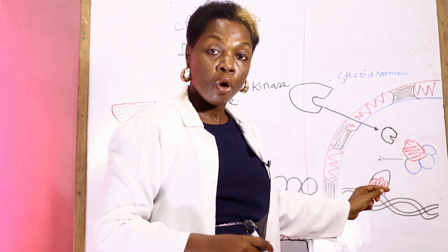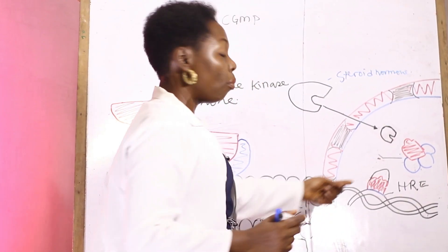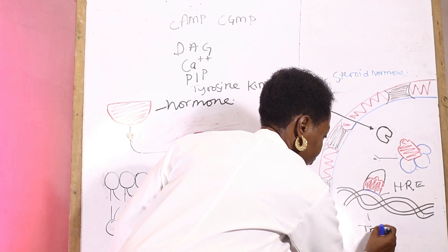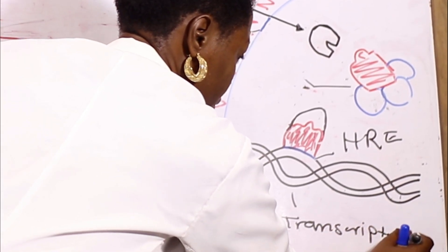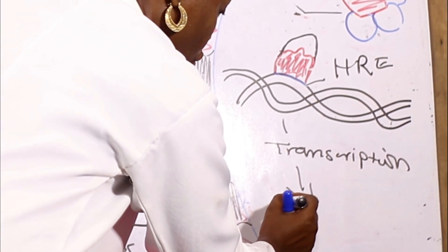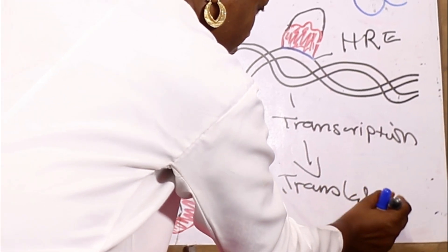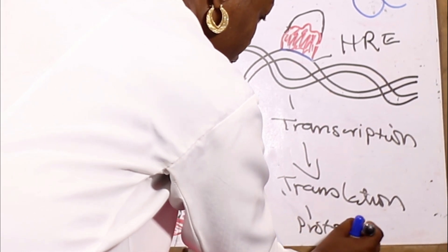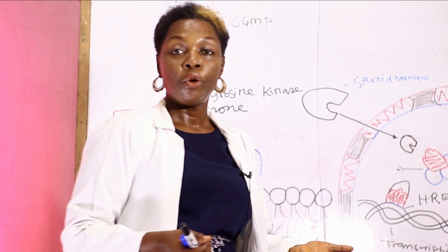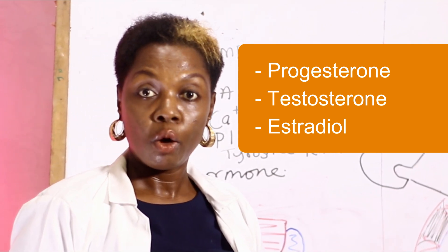When the steroid hormone transcends the cell and forms the intracellular hormone-receptor complex, it migrates to the nuclear membrane, where it binds to hormone-responsive elements — HRE. These hormone-responsive elements bind to the nuclear chromatin, causing the transcription of DNA to RNA, and then eventually the translation of RNA to proteins. Hormones that act via this mechanism are the steroid hormones — for example, progesterone, testosterone, estradiol, or the hormones of the adrenal cortex.